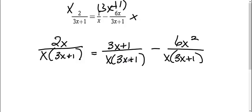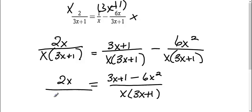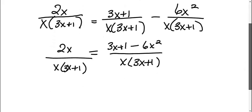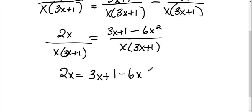Now I'm going to combine these to make one fraction. So I get 3x plus 1 minus 6x squared on the top, and I still have x times (3x plus 1) on the bottom. Now that my bottoms are the same, I can set my tops equal to each other — so I get 2x equals 3x plus 1 minus 6x squared.